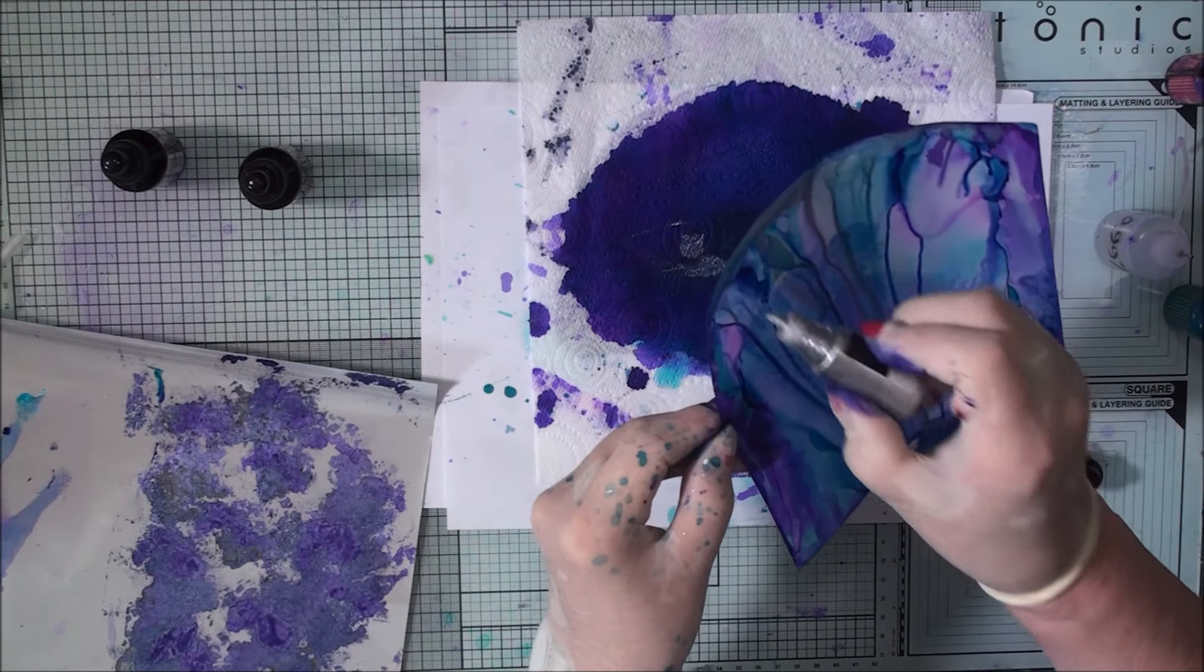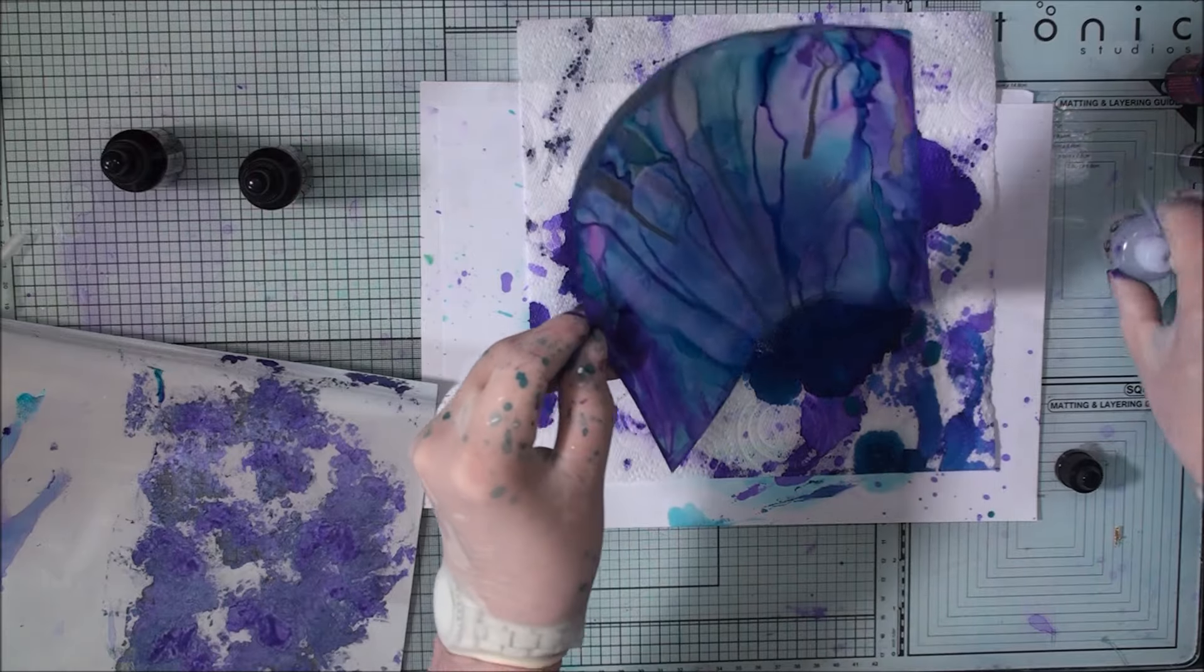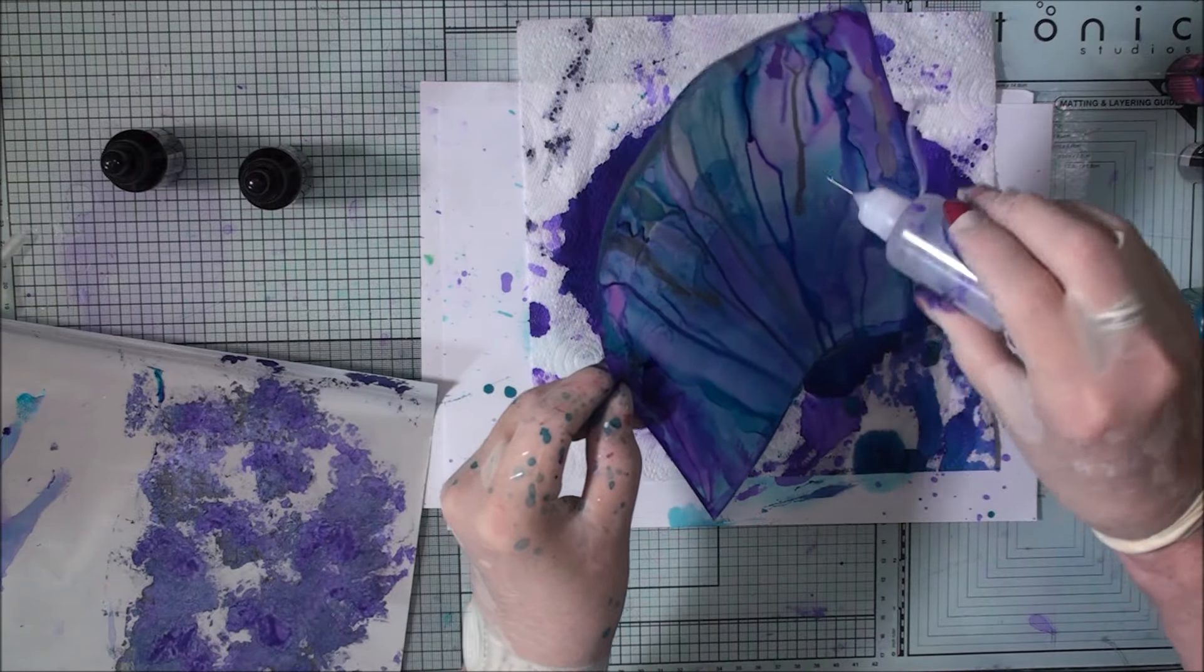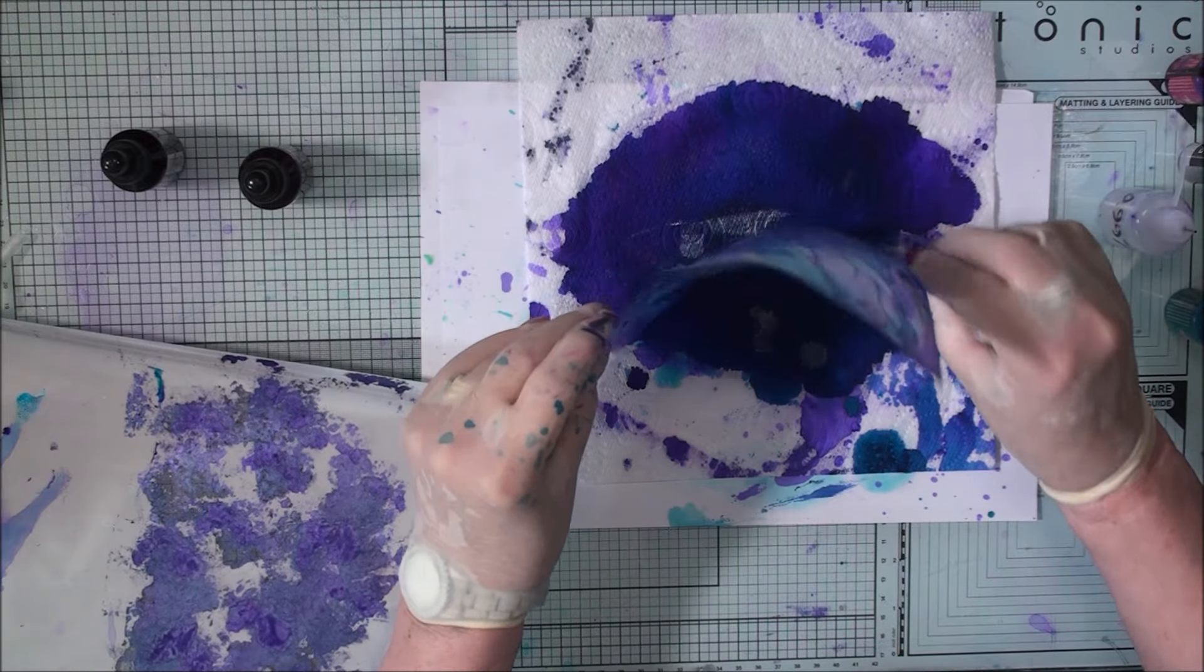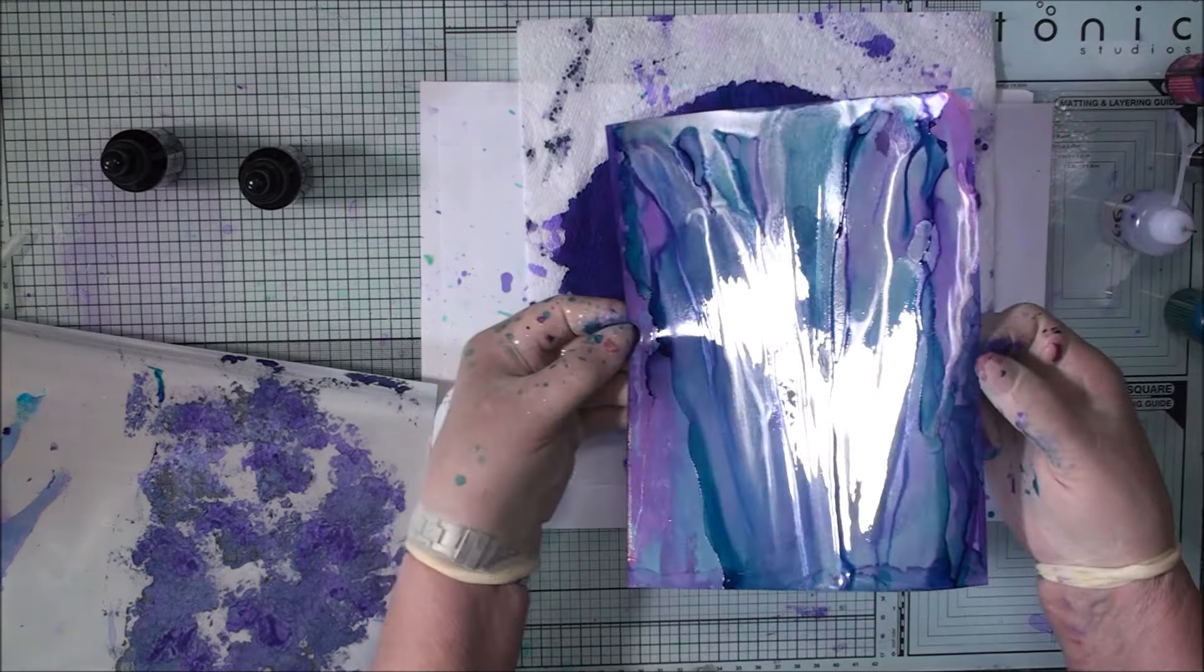And now at the top, I'm going to add in some of the silver. And again, we'll add the isopropyl just to make it run. We'll tilt it all the way down the card and you can see it in streaks.